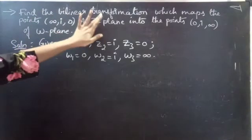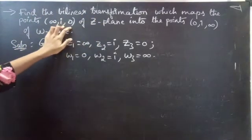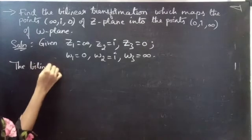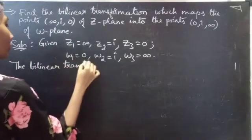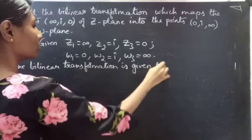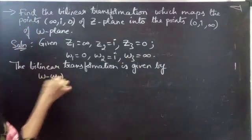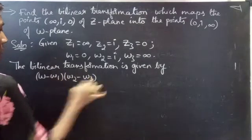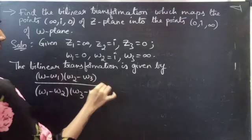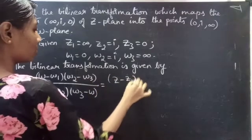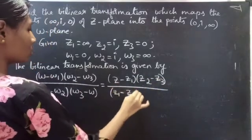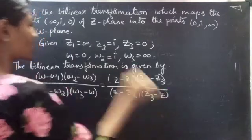We need to find the bilinear transformation which maps the points of the Z-plane into points of the omega plane. The bilinear transformation is given by the cross-ratio property formula: (ω − ω1)(ω2 − ω3) divided by (ω3 − ω2)(ω3 − ω) equals (Z − Z1)(Z2 − Z3) divided by (Z1 − Z2)(Z3 − Z).